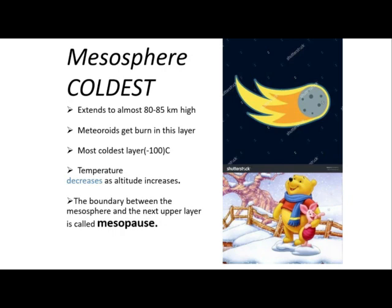Let's go to the coldest part of the atmosphere — the mesosphere. Usually, meteoroids get burned in this layer. It's around negative 100 degrees centigrade. The temperature decreases as altitude increases. The boundary between the mesosphere and the next upper layer is called the mesopause.